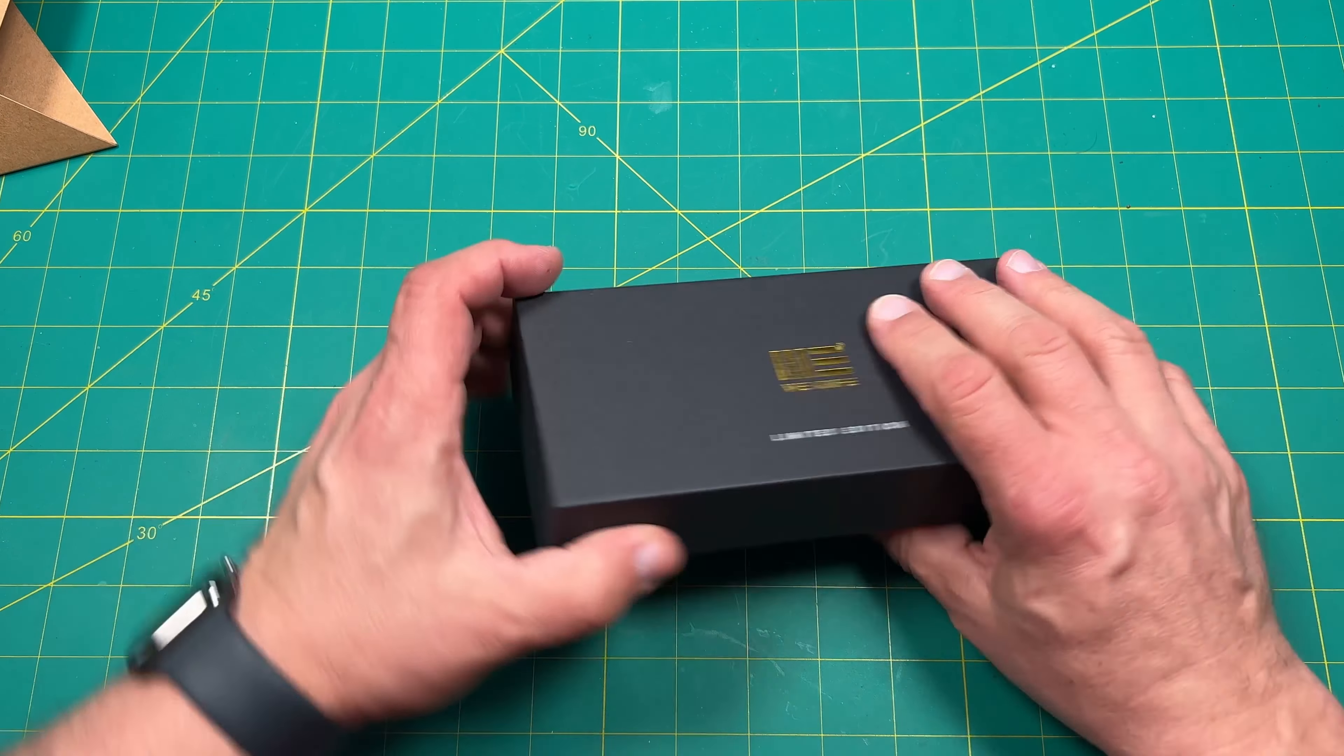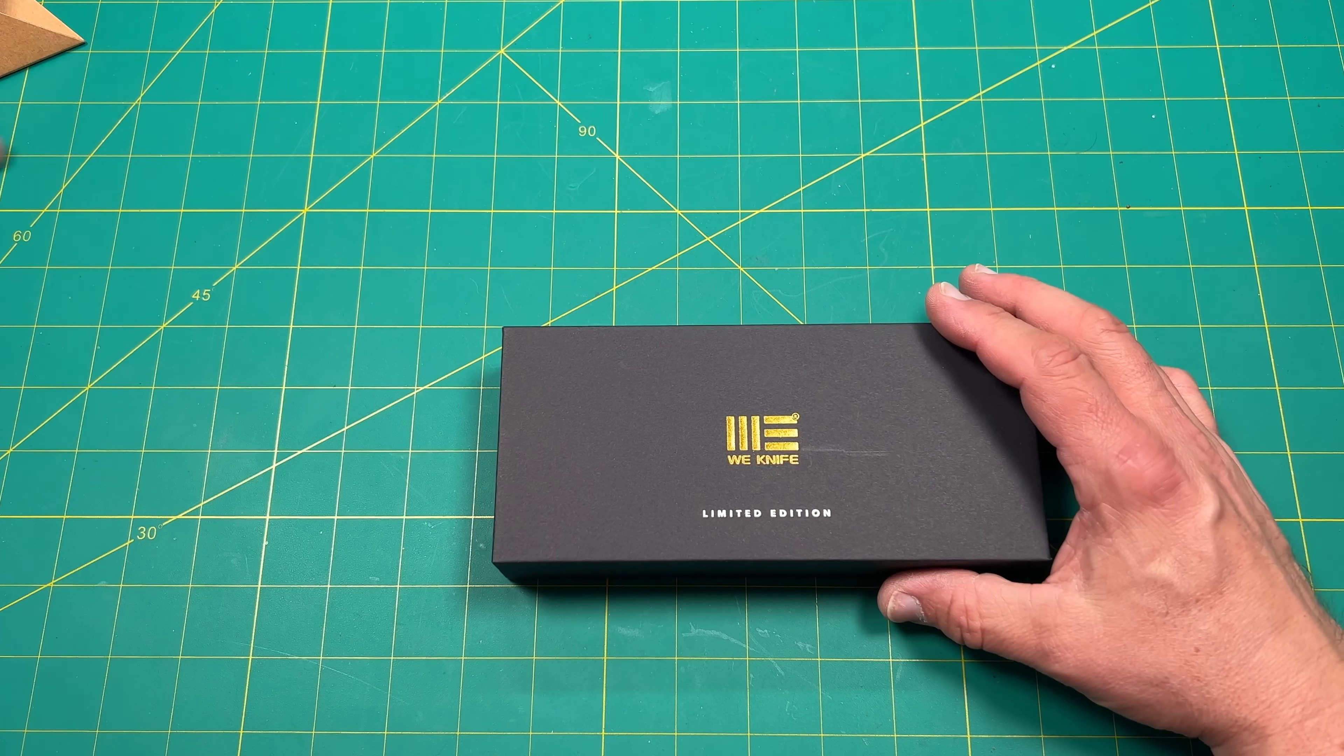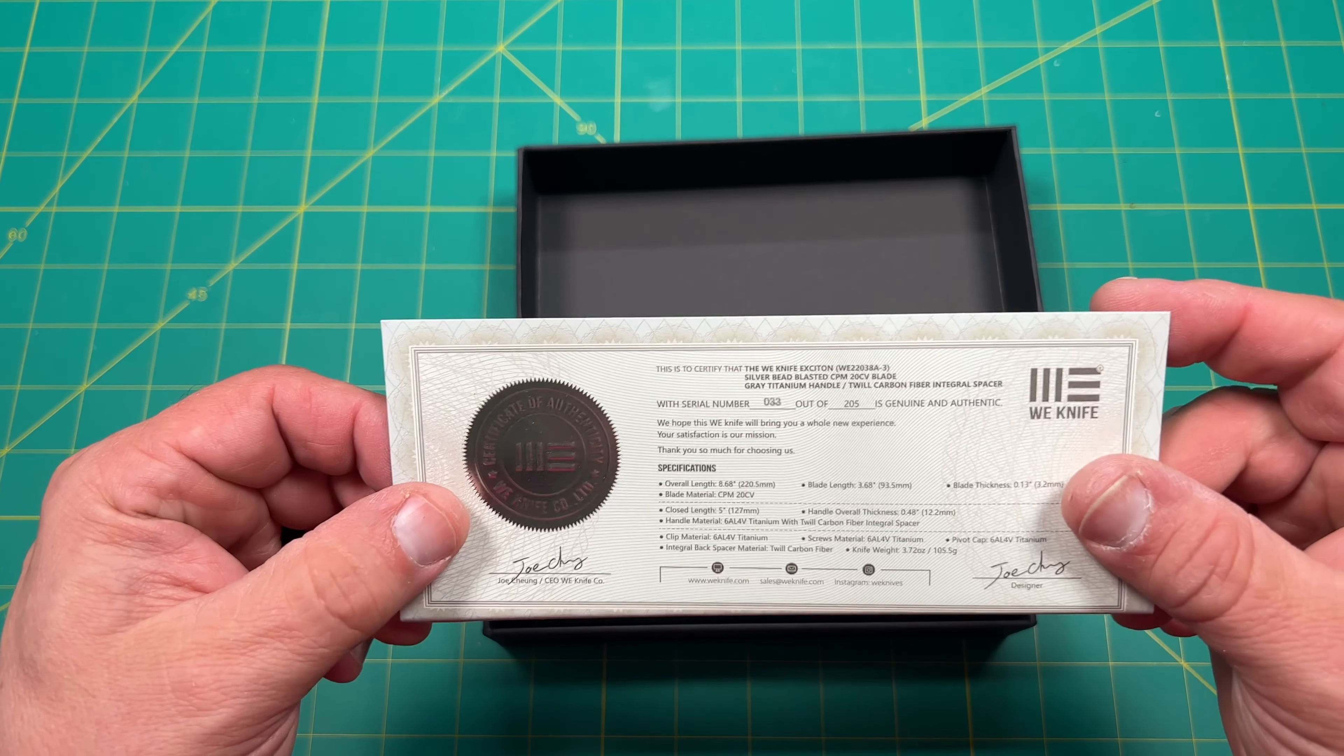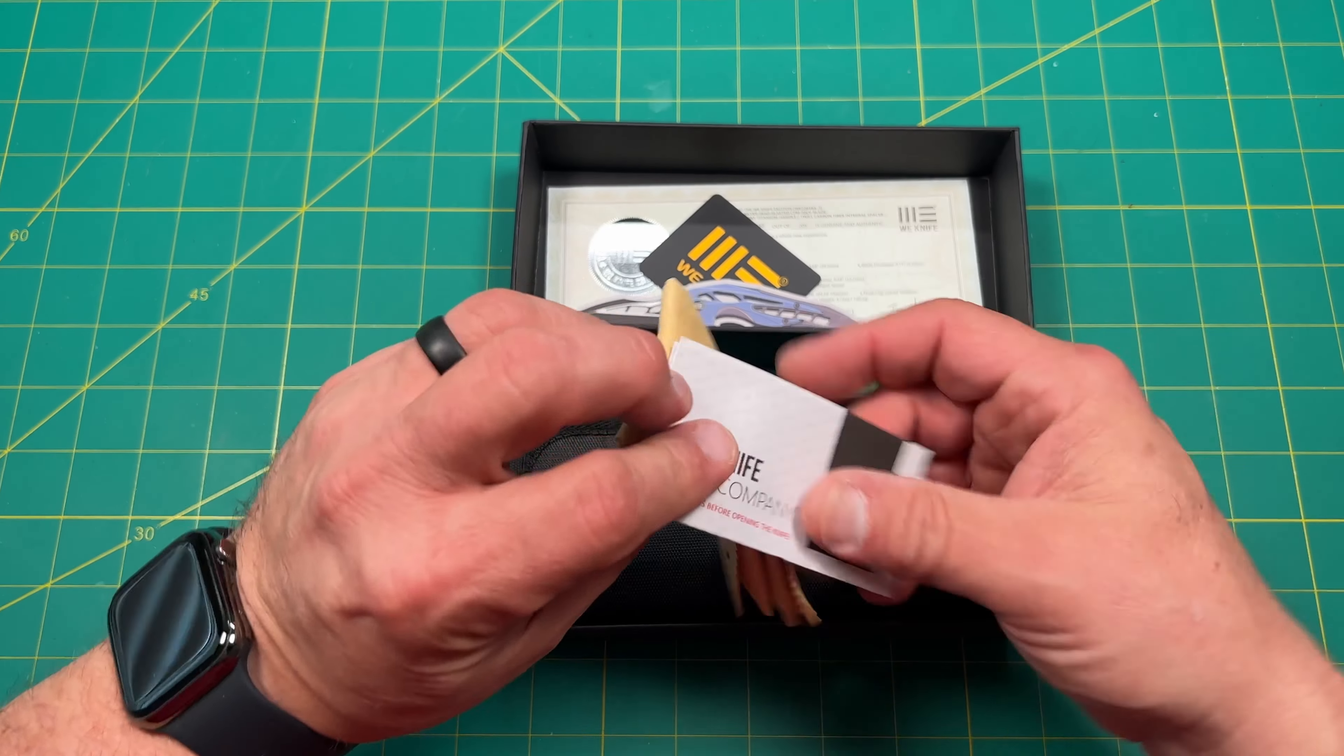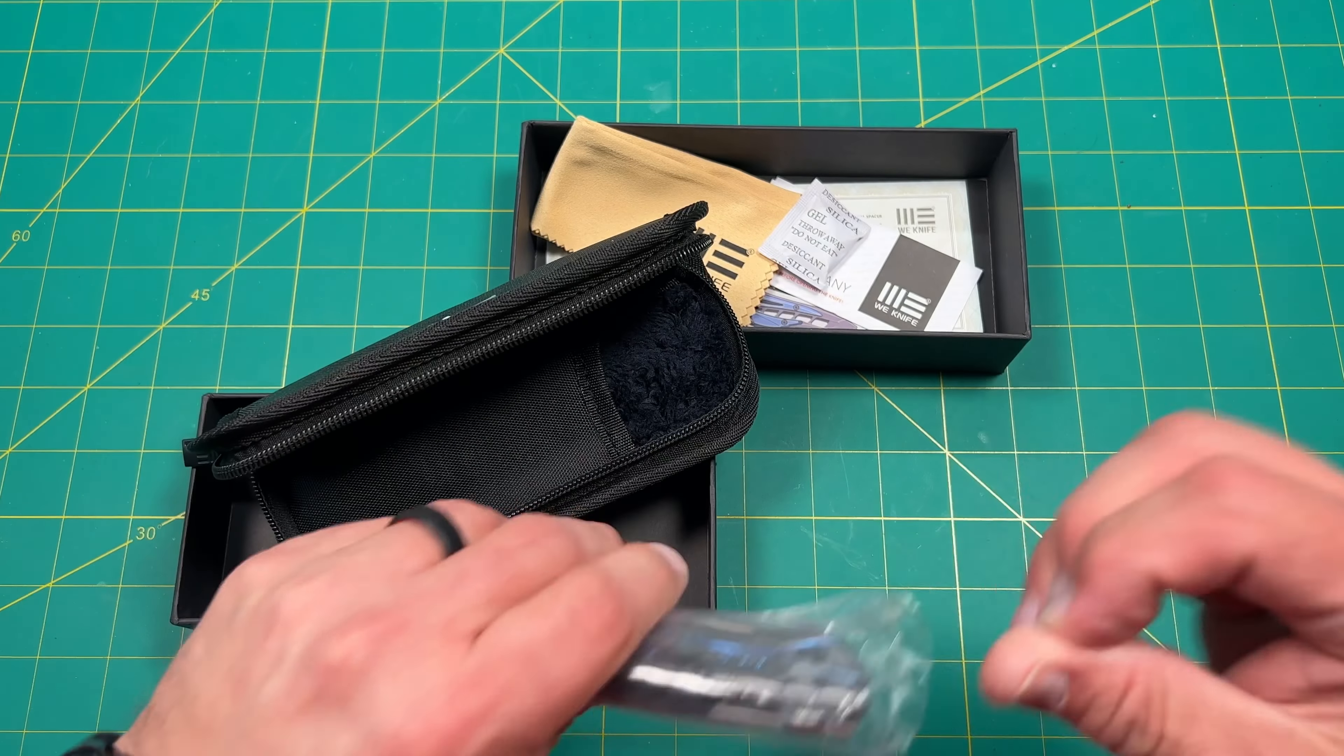All right, it's a limited edition, right? So let's take a look and see what this is. This is the Exciton. All right, it's a gray titanium handle, carbon fiber. Let's take a look and see what this is all about. Put that off to the side. All right, there's a certificate of authenticity. Looks like I have 33 out of 205 copies. Very nice. Get your typical WE stickers, your WE knife, and a nice cleaning cloth, which is always great. And your silica gel. Keeps it nice and dry. Always a nice little bag.